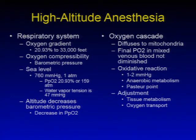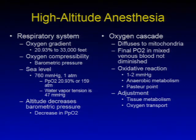Altitude decreases barometric pressure and there is a decrease in the partial pressure of oxygen. With the oxygen cascade, there is diffusion down to the mitochondria. The final partial pressure of oxygen in mixed venous blood is not diminished. However, keep in mind there is also an oxidative reaction that must occur with at least one to two mmHg of oxygen. Anything less than one to two mmHg sends the cells into anaerobic metabolism — this is also called the Pasteur point.